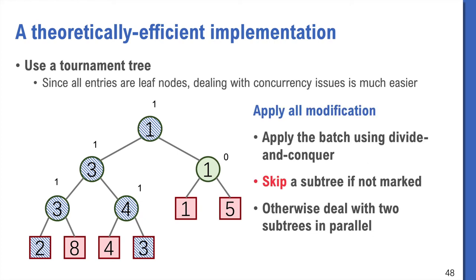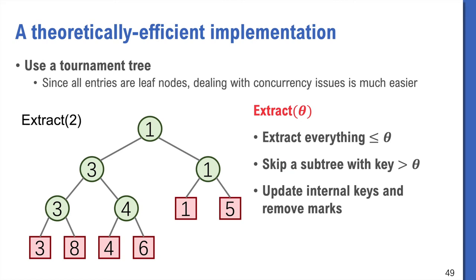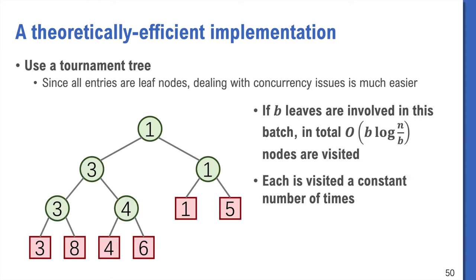Later, we can apply the entire batch of modifications from the root using a divide-and-conquer algorithm. We can skip a subtree if it's not marked. Otherwise we deal with two subtrees in parallel. Set the new value and remove the mark. To extract everything smaller than a threshold, we also use the keys in the internal nodes. We skip the subtree with key larger than the threshold. Otherwise, we deal with the two subtrees in parallel. In this case, we can guarantee that if we have b leaves involved in a batch, in total we only need to visit O(b log n/b) tree nodes. Each is visited a constant number of times.